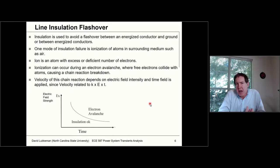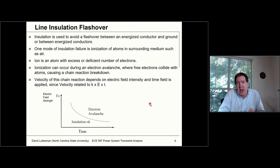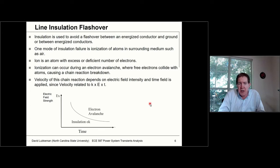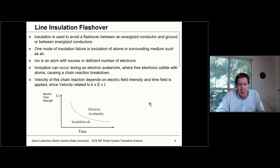One thing that can happen with insulation is a flashover. We like to avoid the situation where we have an overvoltage between an energized conductor and ground. One mode of failure is when we have ionized air surrounding these insulators, which is pretty common. An ion is an atom that has an excess or deficient number of electrons — a net negative or net positive charge.